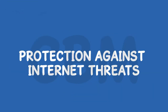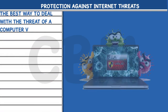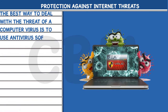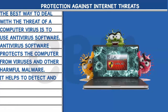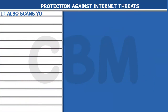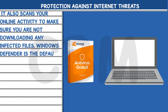Protection against Internet threats: The best way to deal with the threat of a computer virus is to use anti-virus software. Anti-virus software protects the computer from viruses and other harmful malware. It helps to detect and remove any virus from your computer. It also scans your online activity to make sure you are not downloading any infected files. Windows Defender is the default anti-virus software in Windows 10.